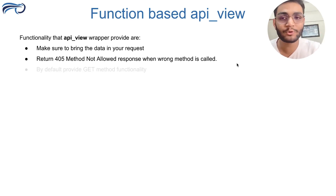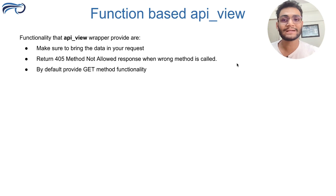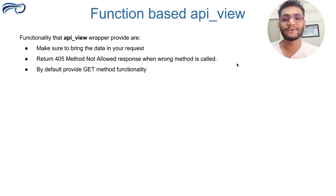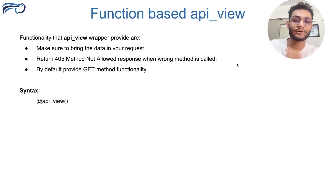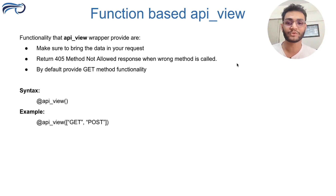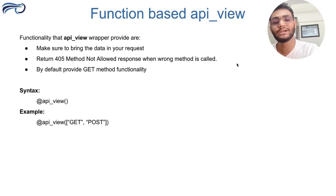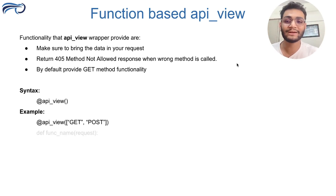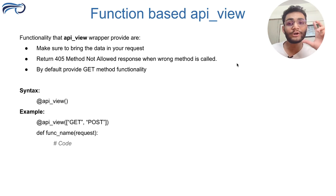The third functionality it provides is the default GET method — if you don't pass a method to the decorator, it will by default treat GET as the method. The syntax is: at the rate symbol (decorator) above the function, write @api_view, and inside it a list of all the methods you want to allow — for example, GET and POST. You can also pass PUT, DELETE, PATCH, or whatever method you want, with your function code below.